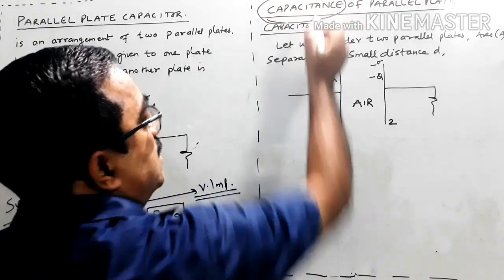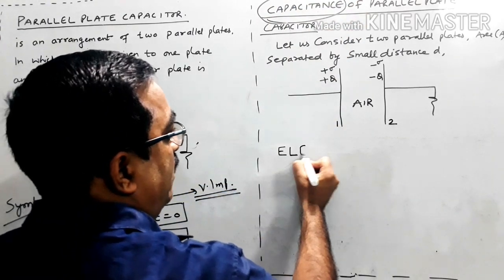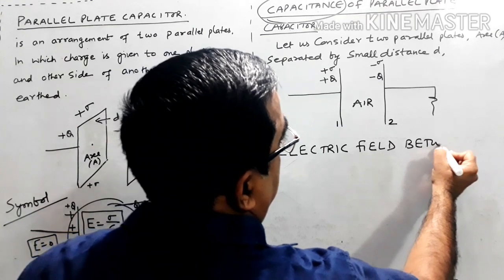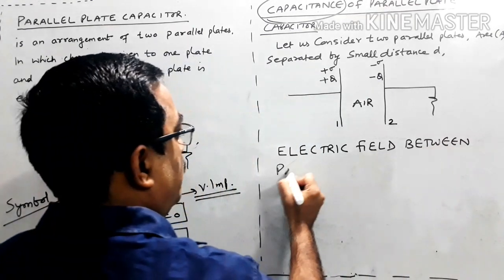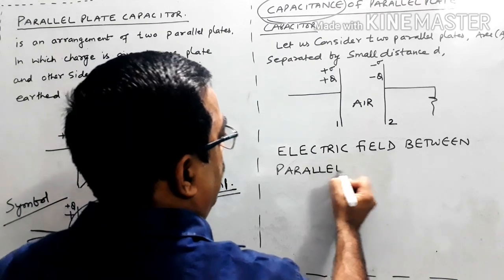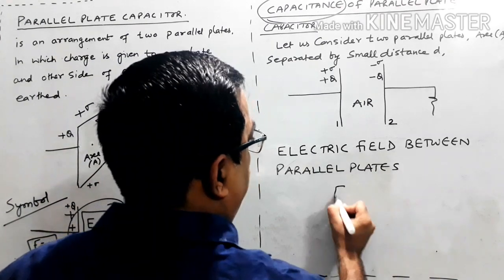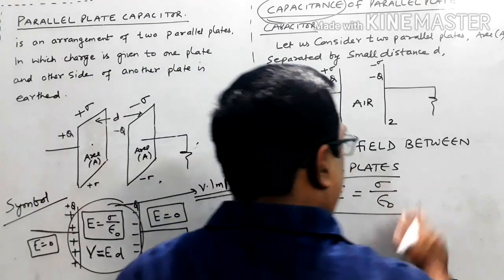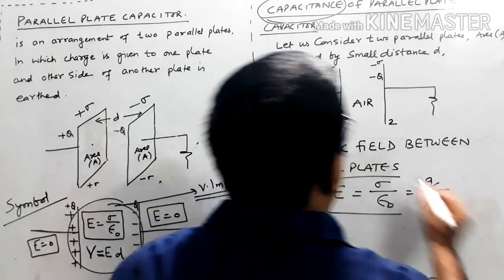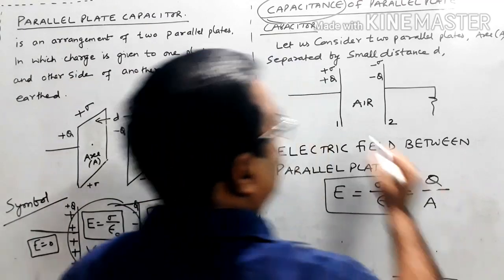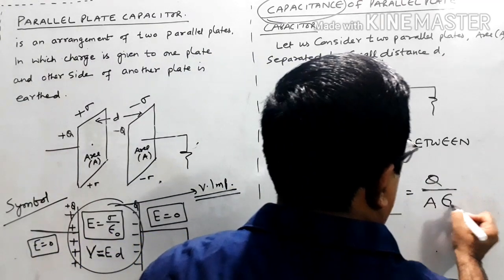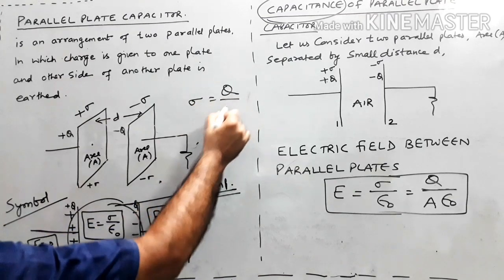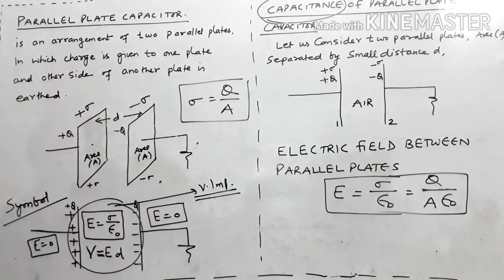We need to find the capacitance. First, electric field between the parallel plates is E = σ/ε₀ = Q/(Aε₀), because surface charge density σ equals charge upon area — we have covered this in previous units.